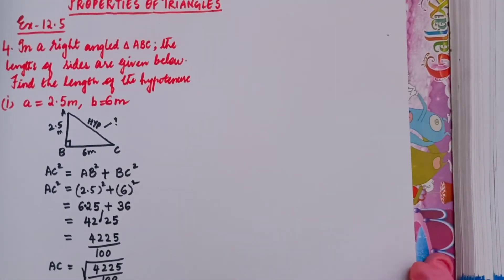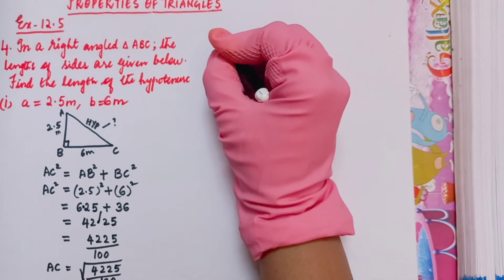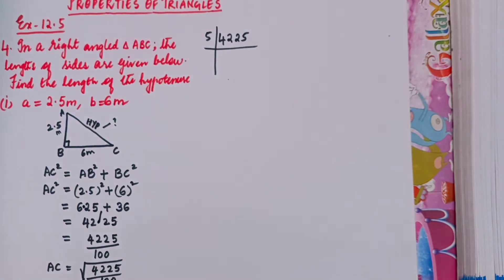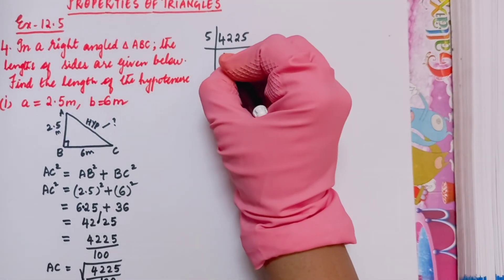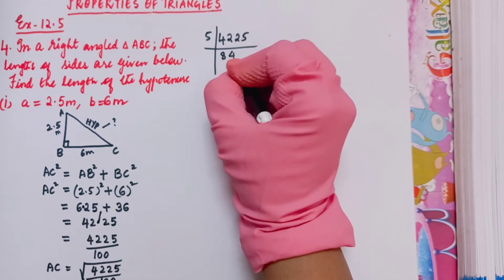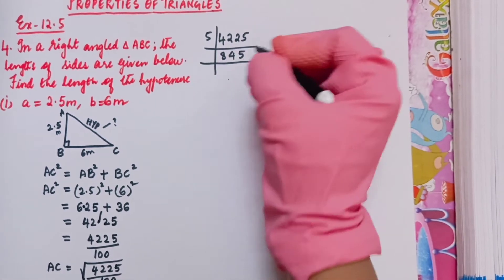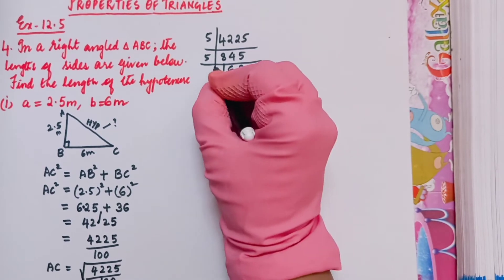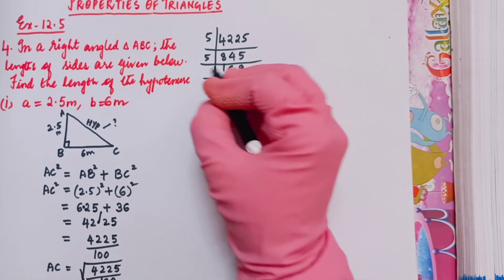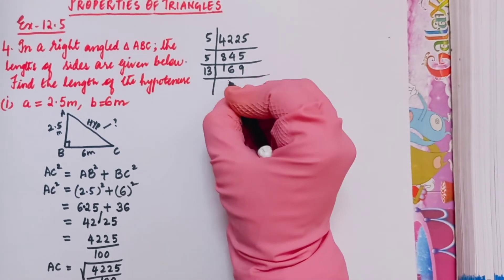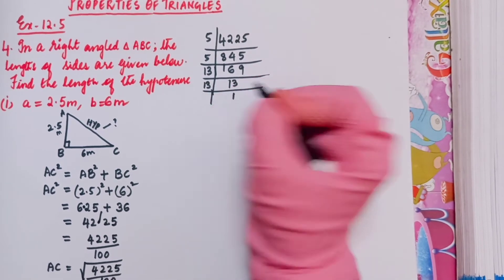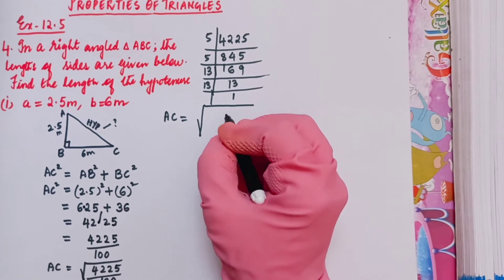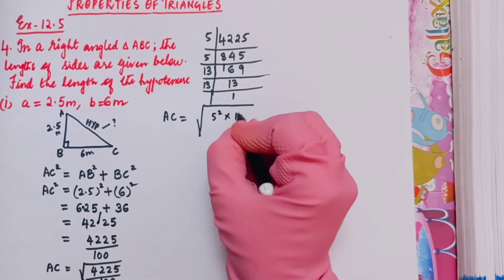We do prime factorization of 4225. Dividing by 5: 5 goes into 4225 to give 845, then 169. Now 169 is in the 13 times table: 13 × 13 = 169. So 4225 = 5 × 5 × 13 × 13 = 5² × 13².